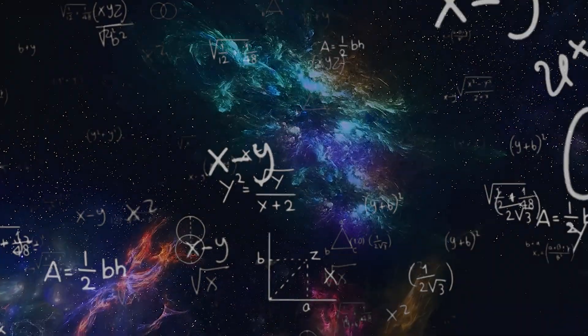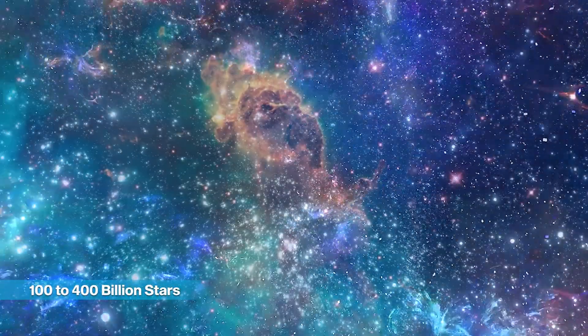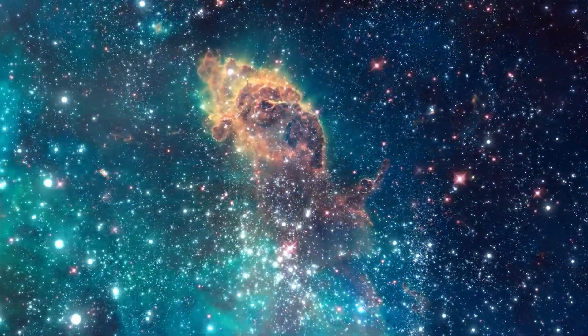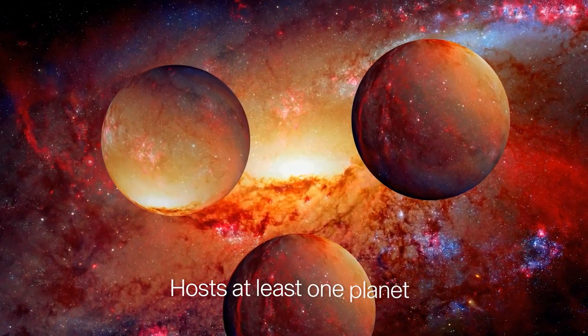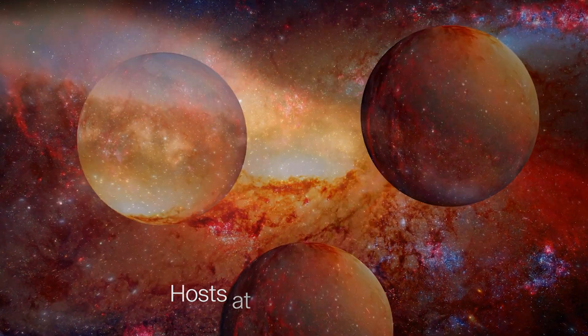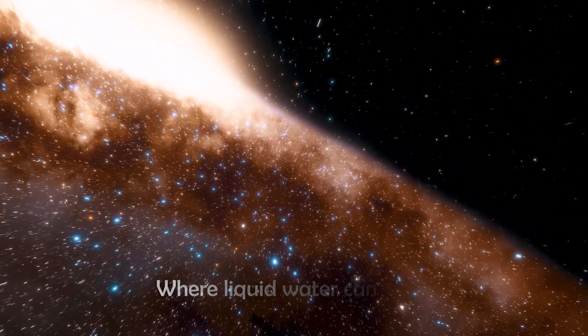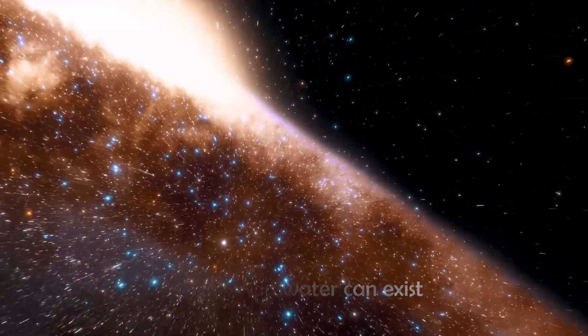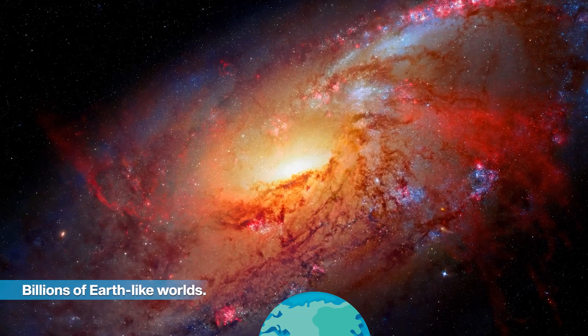The mathematics are staggering. Our galaxy alone contains between 100 to 400 billion stars, and recent discoveries have revealed that virtually every star hosts at least one planet. Conservative estimates suggest that roughly 20% of these planets exist in the habitable zone, where liquid water can exist. This means our galaxy contains billions of potentially Earth-like worlds.